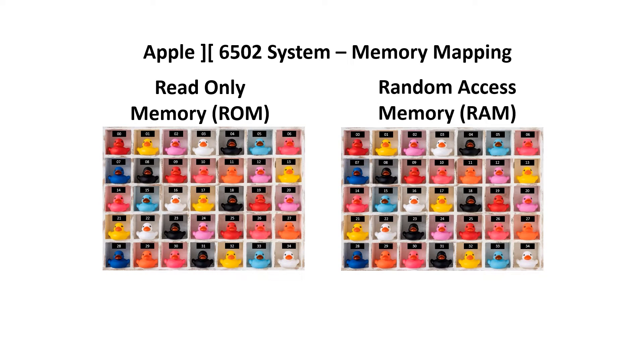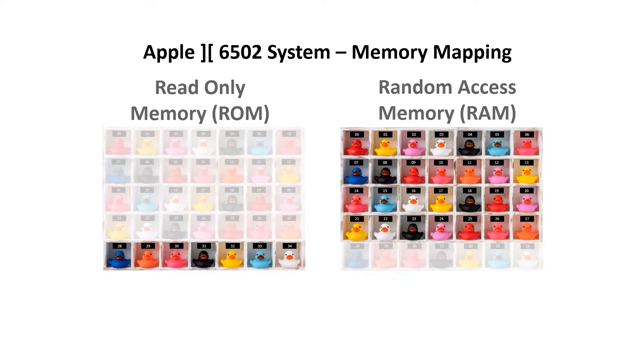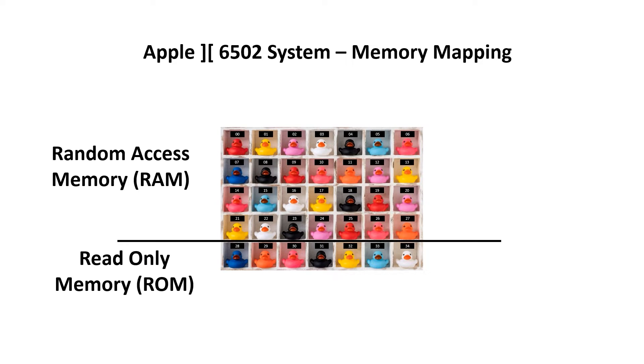Early in the playlist, I went over the concept of memory mapping. The 6502 has 16 address pins, which means it can address 2 to the power of 16 locations. That's the equivalent of 65,536 little pigeonholes, and collectively they're known as the address space.